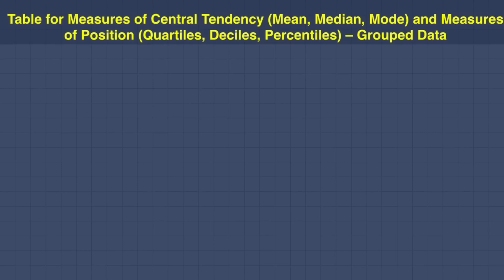Now let us construct the table that we usually use for solving measures of central tendency — those are mean, median, and mode — and solving measures of position: those are quartiles, deciles, and percentiles, which is for grouped data.